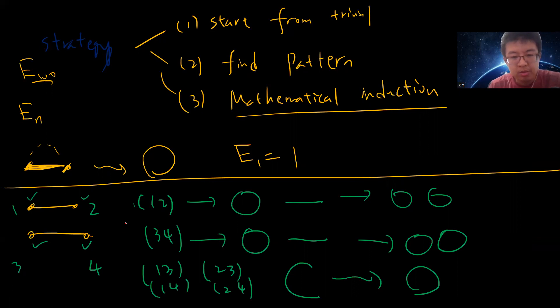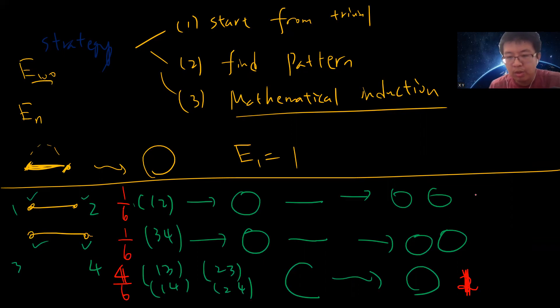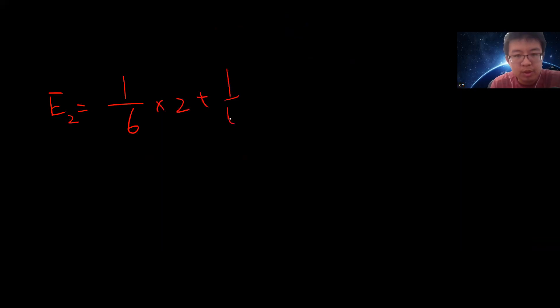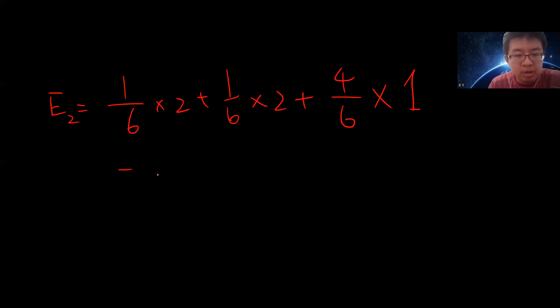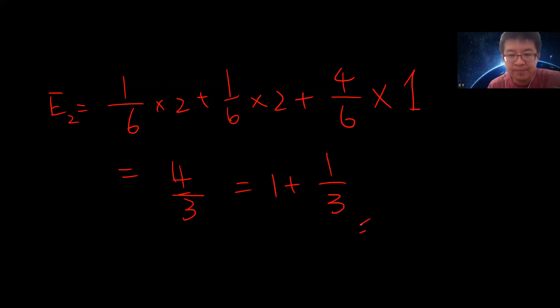There are six total choices. The probability of getting two circles is 2/6 (choosing same-noodle pairs), giving 2 circles, and the probability 4/6 gives 1 circle. So E_2 = (1/6)×2 + (1/6)×2 + (4/6)×1 = 2/6 + 2/6 + 4/6 = 8/6... which simplifies to 1 + 1/3.